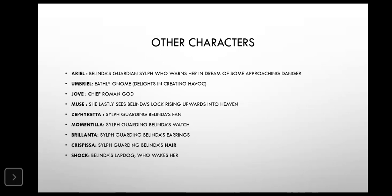Towards the end, when Belinda's lock is cut, the lock rises toward the heavens, and Jove is the eyewitness who sees the lock rise. Then there are Zephyretta, Momentella, Brillante, and Crispissa. In their names there is a comic element that suggests their work. Zephyr means breeze or wind, so Zephyretta is the sylph guarding Belinda's fan. Momentella — the word 'moment' suggests time — is the sylph appointed to guide Belinda's watch.